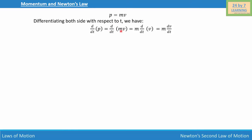And as we know that m is constant, so we will take that out. If we do that, we have only velocity left, so we'll write that is equal to m times d/dt of velocity. And we know that d/dt of velocity is dv/dt. So we will write that is equal to m dv/dt. Simplifying further, d/dt of p is equal to m times acceleration, because dv/dt is acceleration.